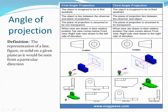In first angle projection, the views are drawn in relative positions: the top view comes below the front view, and the right side view is drawn on the left side. In third angle projection, the opposite applies: the top view comes above the front view, and the right side view is drawn on the right side.